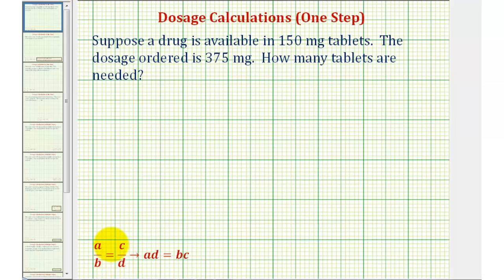So once we form the proportion, the cross products will be equal, meaning A times D will always equal B times C. So if we have one unknown value, we can solve for the unknown by cross multiplying and solving this equation.